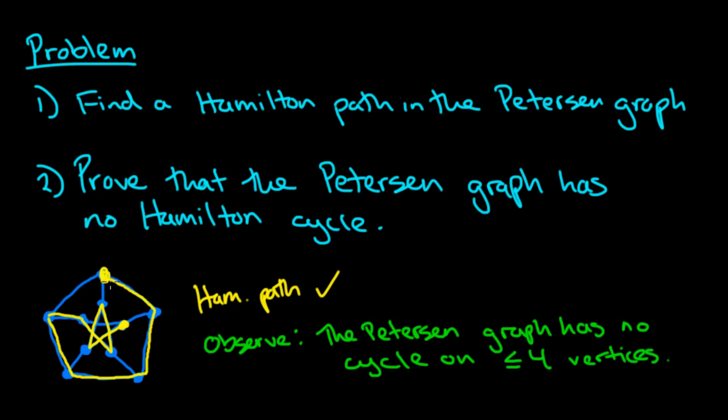the Petersen graph has no cycle on less than or equal to four vertices. We can take a look at the Petersen graph and certainly find many cycles which have length five, but there is no cycle on three vertices or four vertices. So we'll use this fact to help us prove that the Petersen graph has no Hamilton cycle.